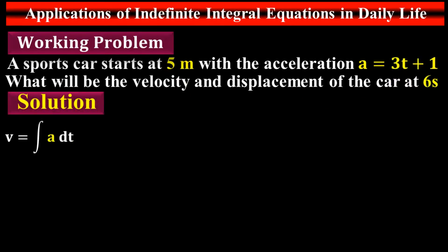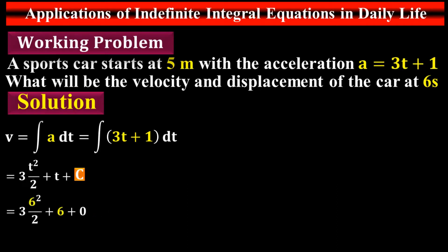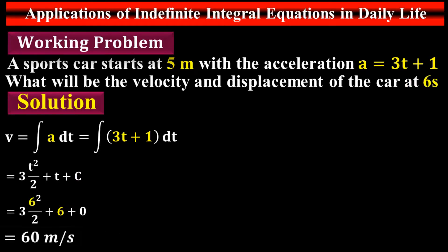Solution: velocity equals the integral of acceleration, where acceleration is 3t + 1. Substituting, the integral of (3t + 1) equals (3t²/2) + t + C. The arbitrary constant C is zero at the initial stage because at t = 0, C = 0. Substituting t = 6, the velocity is 60 meters per second after 6 seconds.